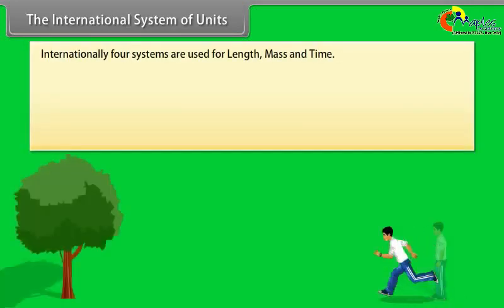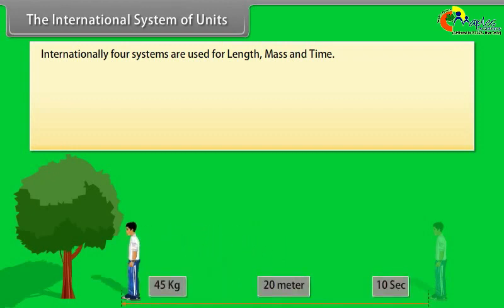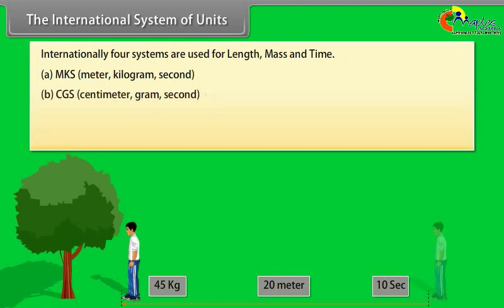The international system of units. Internationally, four systems are used for length, mass and time: A) MKS system, that is meter, kilogram, second system. B) CGS system, that is centimeter, gram and second system. C) FPS system, that is foot, pound, second. D) SI system, that is international system of units.